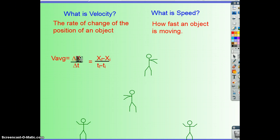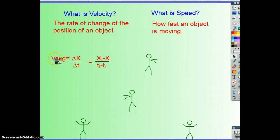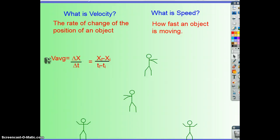Number seven: a school bus takes 0.53 hours to reach school from your house. If the average velocity of the bus is 19 kilometers per hour, what is the displacement to the east? Using the equation: velocity equals displacement over time, so 19 km/h equals displacement divided by 0.53 hours. Multiply time over to solve for displacement — it should be about half of 19, so roughly an answer of about nine kilometers.